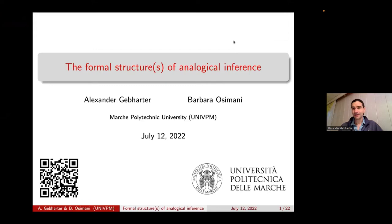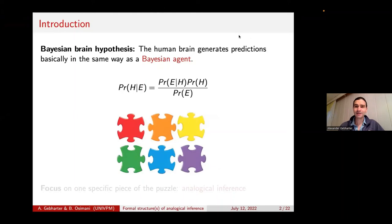Thanks for the introduction and for the possibility to present our paper here. The title of the talk slightly changed, but you still get the same content. I'll start with a brief introduction of what to expect in the next roughly 30 minutes. I want to start with the Bayesian brain hypothesis, which basically says that the human brain generates predictions in the same way as an ideal Bayesian agent.